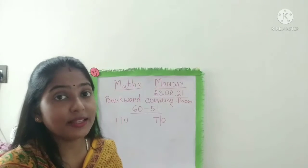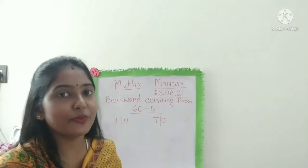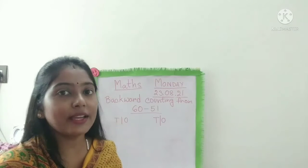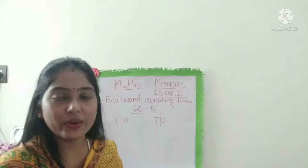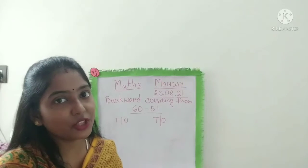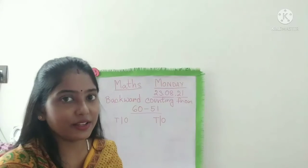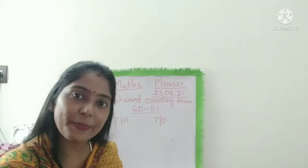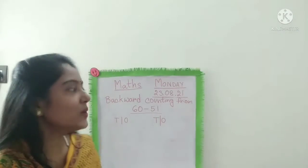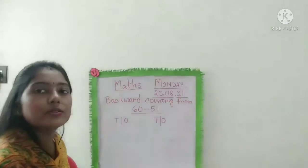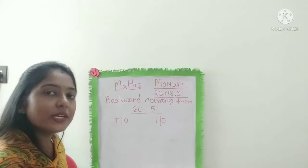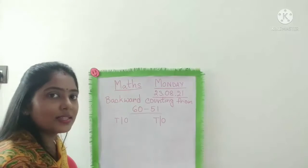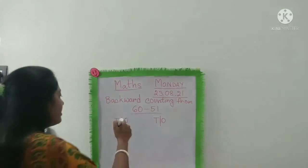First we will write forward counting from 51 to 60 and then you will write backward counting. So children, be ready with your math copy, pencil and eraser and write the numbers in your copy. Now look at the board. First we will revise the numbers from 51 to 60. So let's write.